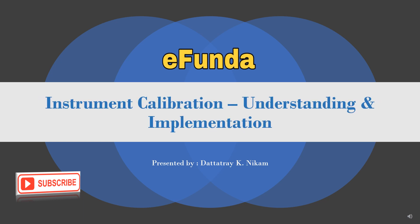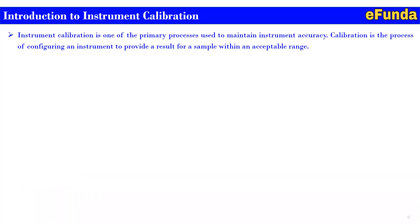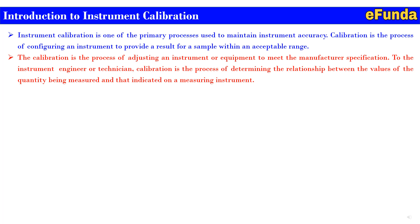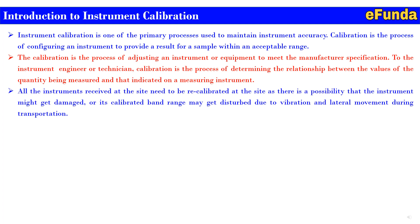Let's begin with our today's topic: instrument calibration — understanding and implementation. Instrument calibration is one of the primary processes used to maintain instrument accuracy. Calibration is the process of configuring an instrument to provide a result for a sample within an acceptable range. It is also the process of adjusting an instrument or equipment to meet the manufacturer's specification. To the instrument engineer or technician, calibration determines the relationship between values of the quantity being measured and those indicated on the measuring instrument. All instruments received at site need to be recalibrated, as they may get damaged or their calibration range disturbed due to vibration and lateral movement during transportation.